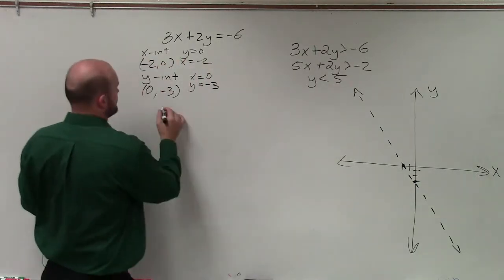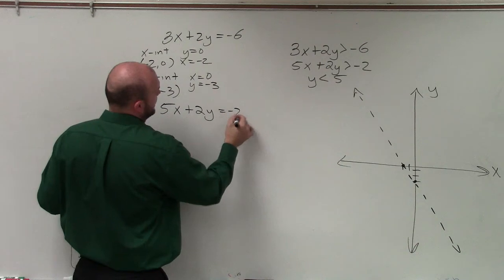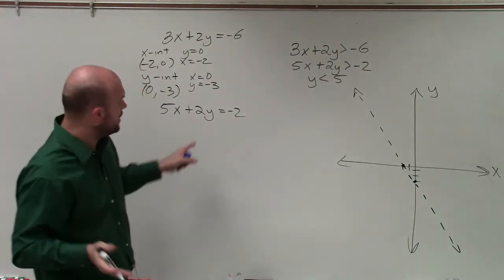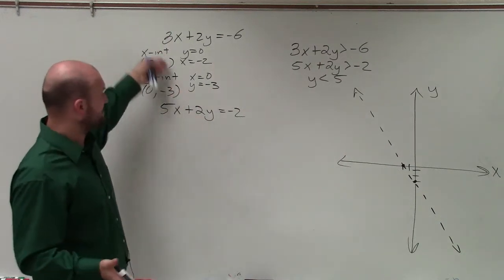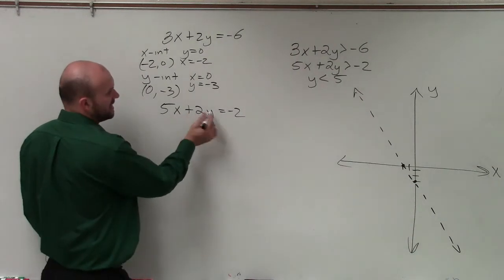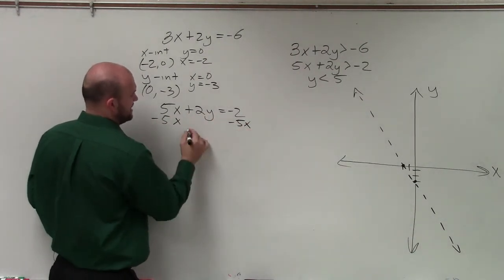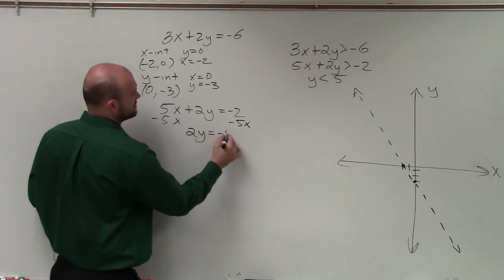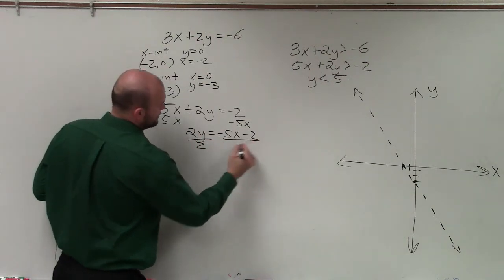All right, now let's go ahead and move on to the next equation or next inequality, which I'll rewrite as an equation. Again, for graphing, it's not going to make a difference. Now, you can see that 5 and 2 are not divisible into my value of c. So therefore, rather than using the intercept form like I did here, I will use slope-intercept form. So to do that, I need to solve for y. So I'll subtract the 5x on both sides. And therefore, I have 2y equals negative 5x minus 2. We always want to write this variable term in front of our constant. Then I'll divide by 2.